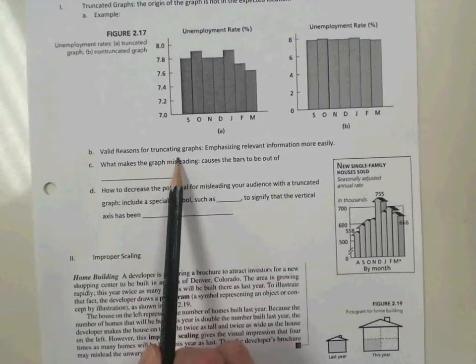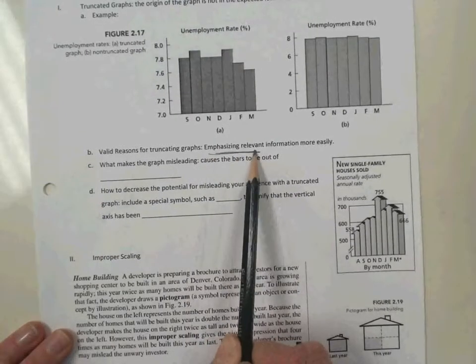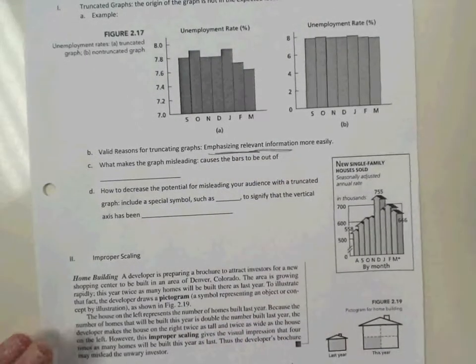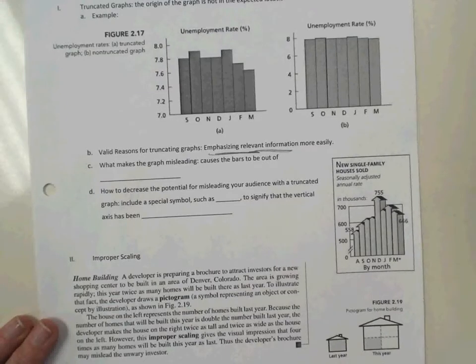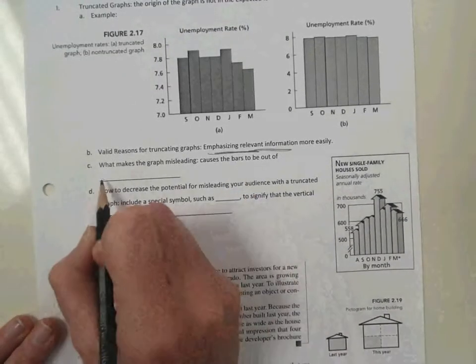There are valid reasons for truncating graphs. And that would be to emphasize relevant information more easily. What makes the graph misleading is that it causes the bars to be out of proportion.